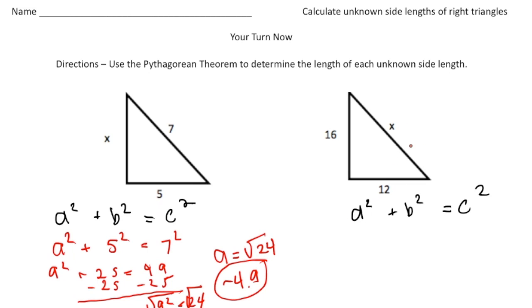The second one this time we're trying to solve for the hypotenuse. So we're going to try to solve for the c value. So again I'm going to have the 16 be the a. So it's going to be 16 squared plus the 12 is going to be the b. So 12 squared equals c squared.